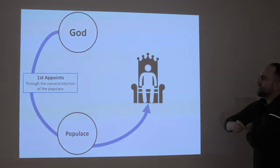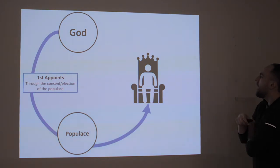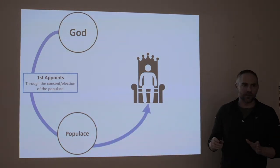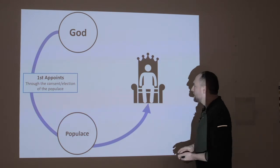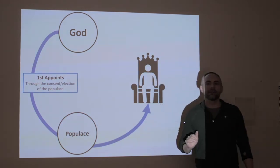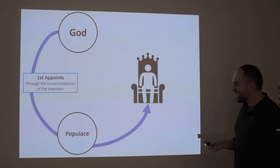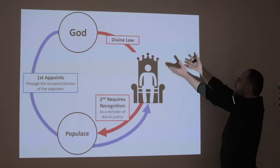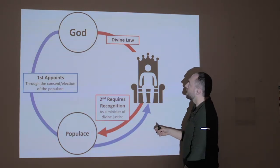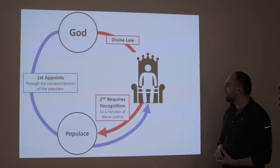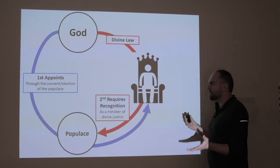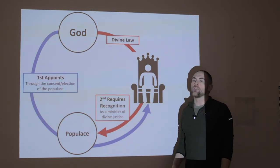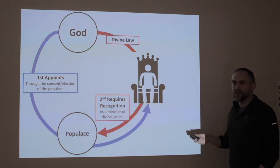So here's the theory. First, God appoints a king through the consent and election of the populace as guided by his principles in scripture. It isn't as simple as God appoints the king or the populace does — God is doing this through his providence through a people. Once that's occurred, God lays his divine law upon the king as the highest authority. When the king is ruling according to that law and the general equity of it, it requires recognition of that people as a minister of divine justice. That's how they're going to read Romans 13 and 1 Peter 2.